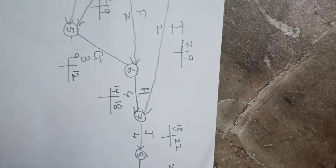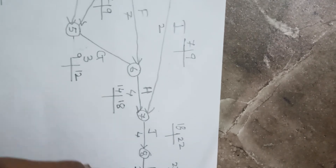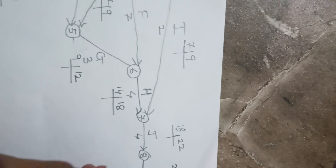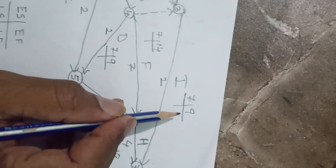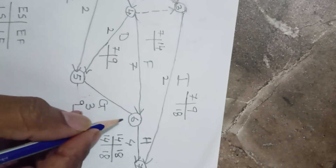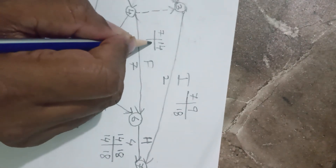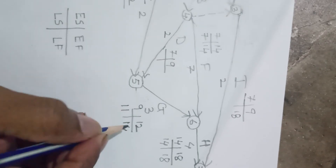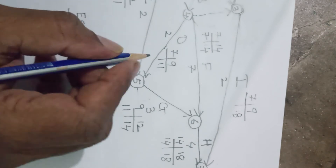The maximum value at the end is 23, so I will use 23 for the backward calculation for all ending activities. Starting the backward pass: 23 minus 1 equals 22, that 22 comes here, 22 minus 4 equals 18. That 18 comes for J as well as for H. For H: 18 minus 4 equals 14. This 14 comes in both directions — 14 minus 7 equals 7, and 14 minus 3 equals 11. Then 11 plus 3 equals 14, and 11 minus 2 equals 9.